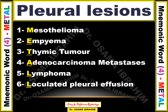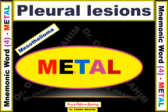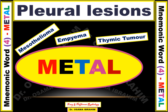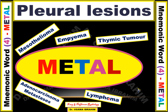If I find a mass in the pleura, I can differentiate mesothelioma from adenocarcinoma metastasis or lymphoma only by biopsy or further investigation. So you should remember the differential diagnosis using the METAL mnemonic word for pleural lesions. You can also remember it using this diagram: METAL represents M for mesothelioma, E for empyema, T for thymic tumor direct invasion, A for adenocarcinoma metastasis, and L for lymphoma or loculated pleural effusion.